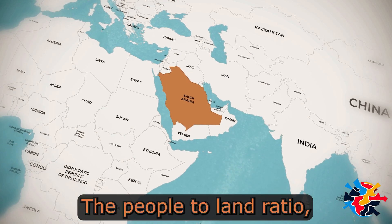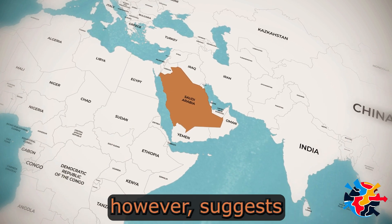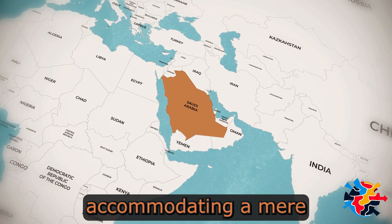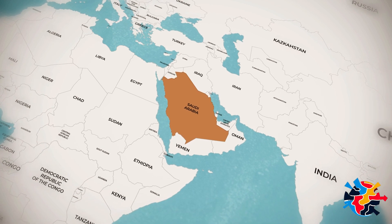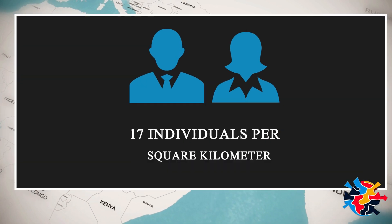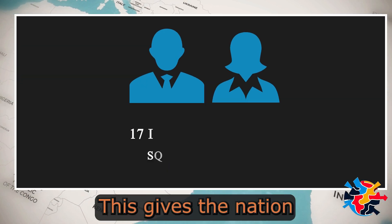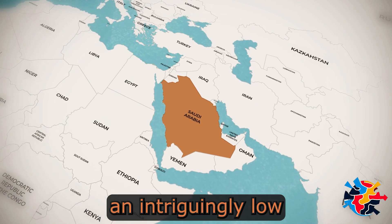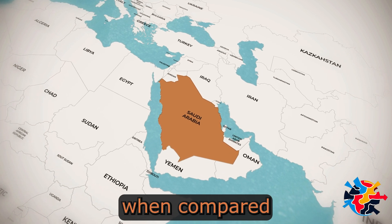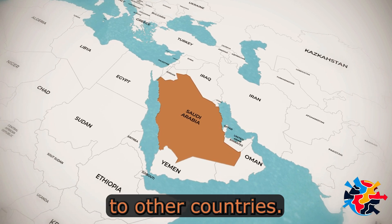The people-to-land ratio suggests a sparse distribution, accommodating a mere 17 individuals per square kilometer. This gives the nation an intriguingly low population density when compared to other countries.